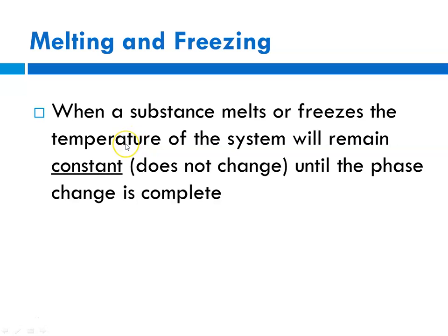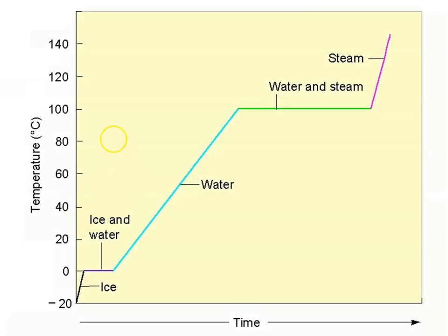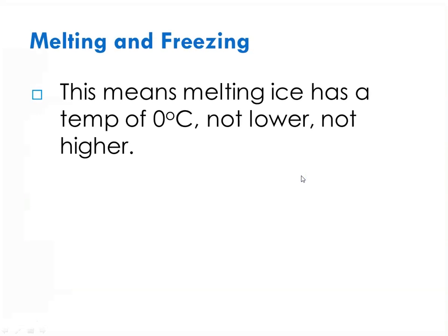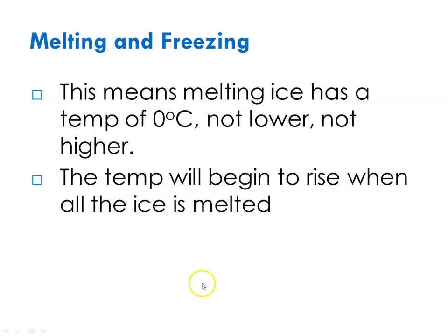Let's talk about these phase changes, starting with melting and freezing. When a substance melts or freezes, the temperature of the system will remain constant until the phase change is complete. For water, the temperature remains constant during the phase change — you have solid ice, and at zero degrees, where ice typically melts, you will have a mixture of ice and water, but that temperature remains at zero. So if you have a cold drink in the summer with ice in it, as long as there's an ice cube in it, the temperature will remain at zero. But once the last bit of ice melts, the temperature will start to increase.